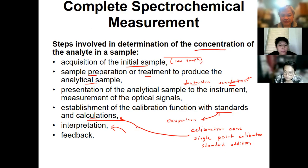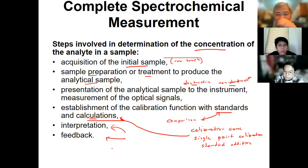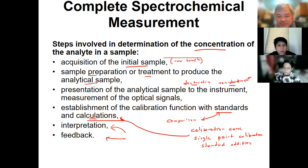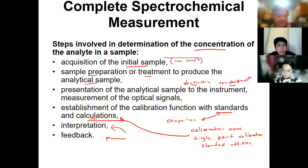After calculation, there's interpretation — what do your results mean? It always goes back to the goal of your analysis: do you want to develop or improve a method, or use spectroscopy as an alternative method? Based on that, you also get feedback — is it a good analysis? If it's a rapid analysis that's ideal, but if the reaction takes an hour or longer, that's not a very good analysis. Those are the typical steps in spectrochemical measurement.